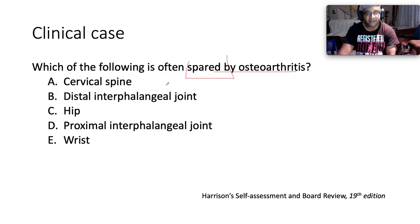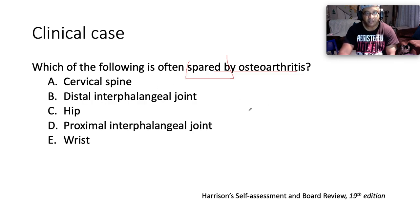Is it A, the cervical spine? B, the distal interphalangeal joint? C, the hip? D, the proximal interphalangeal joint? Or is it E, the wrist?